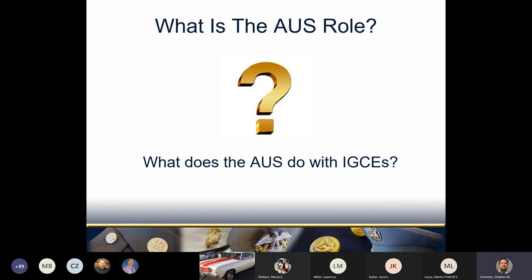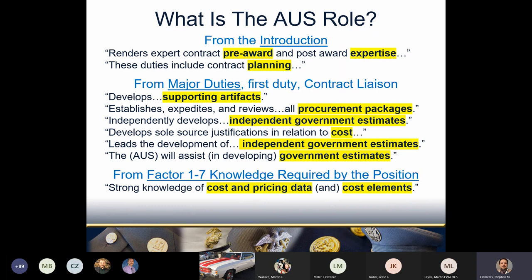So what is the AUS role regarding IGCEs? I checked the AUS PD to see what it had to say. If you are an AUS and have not read the AUS PD, you absolutely should — it's really interesting. As we can see from the quotes, the AUS is supposed to be an expert at acquisition planning, of which estimating spending is a critical part. Our first duty, contract liaison, charges us with developing supporting artifacts — the documents we give to contracting, including the IGCE. Beyond reviewing procurement package documents, we must be able to independently develop this information. The knowledge requirement section says the AUS needs strong knowledge of cost and pricing information.